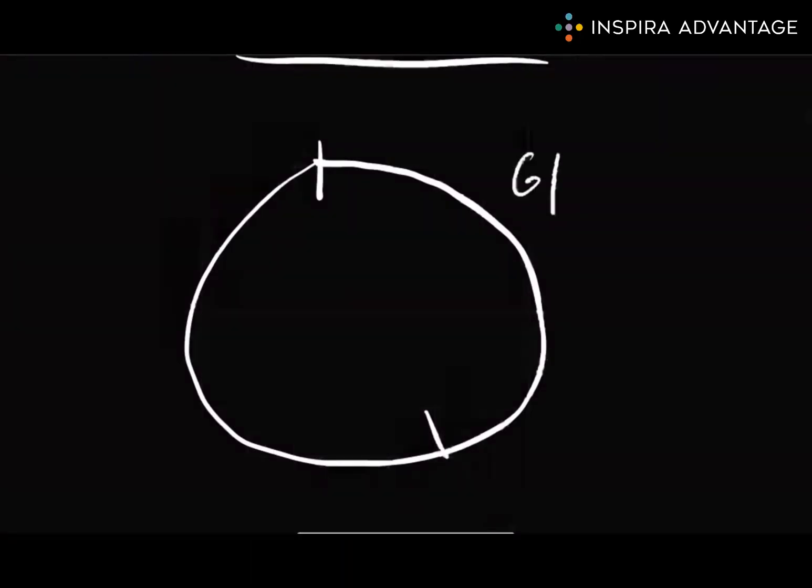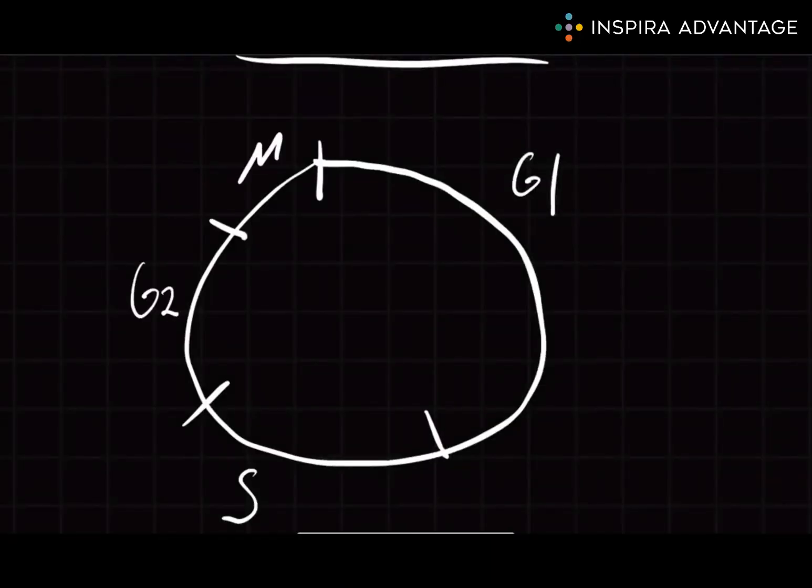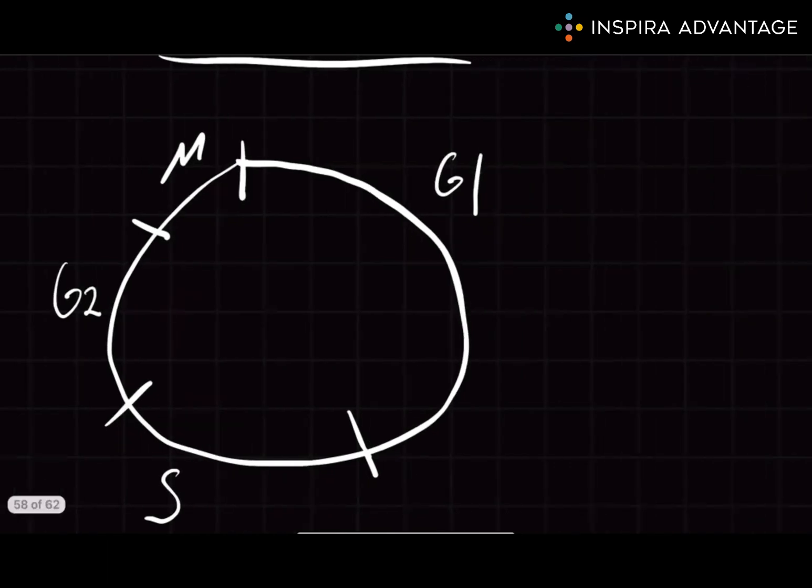Let's start with the cell cycle in G1. During G1, the cell is making mRNA and proteins to prepare for mitosis.